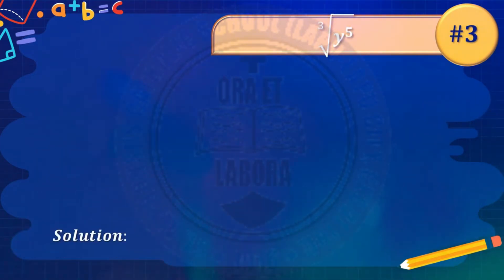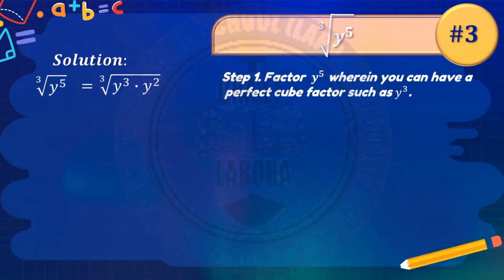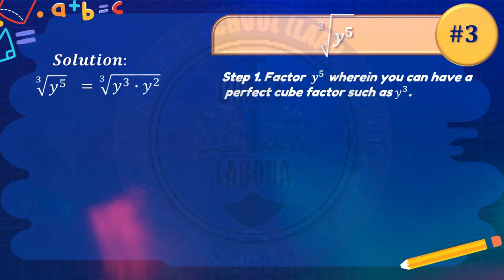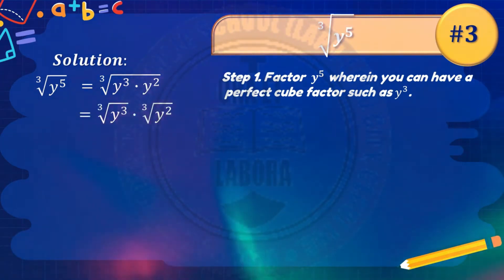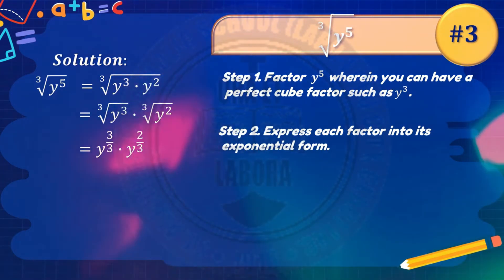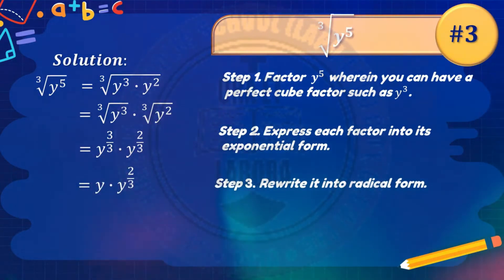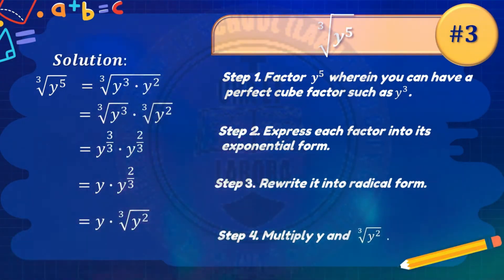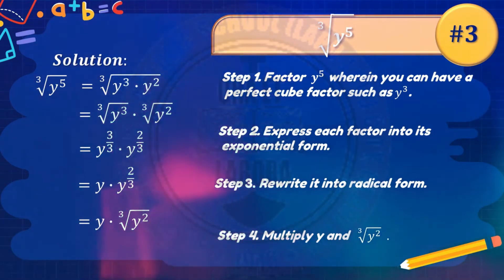Number 3: the cube root of y raised to 5. Factor y raised to 5 wherein we can have a perfect cube factor, such as y cubed. The remaining factor is y squared. So we have the cube root of y cubed times the cube root of y squared. Express each factor into exponential form: y raised to 3 over 3 times y raised to 2 thirds. Simplifying gives y times y raised to 2 thirds. Rewrite into radical form: y times the cube root of y squared. Multiply to get y times the cube root of y squared, written as y cube root of y squared.